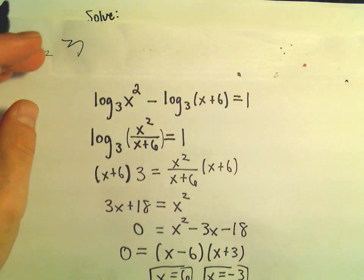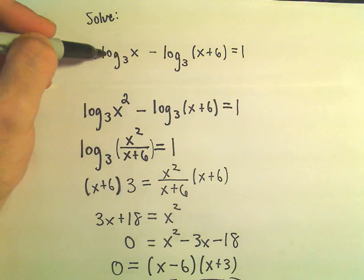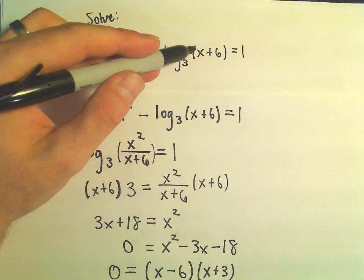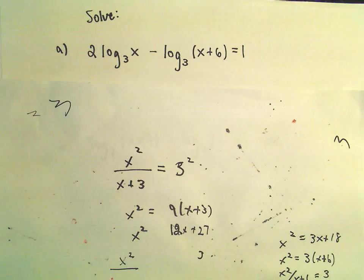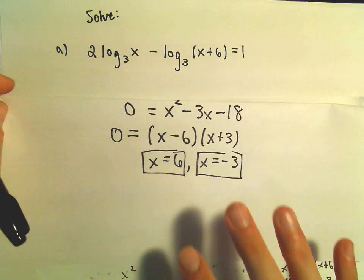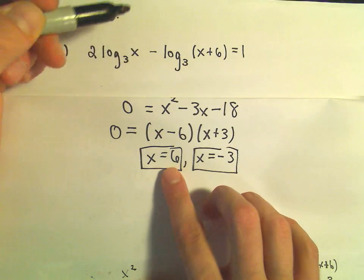Now let's go back and look at the original problem. We were trying to solve 2 times log base 3 of x minus log base 3 of x plus 6. Notice if we plug in the value 6, we'll get a 6 here, which is fine. I'll get a logarithm of a positive number. If I plug 6 into the other logarithm, I'm going to get a logarithm of a positive number.